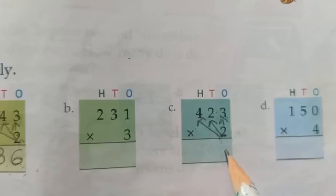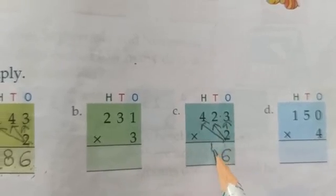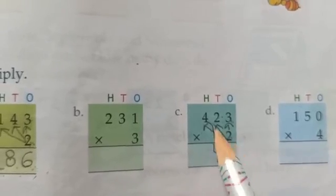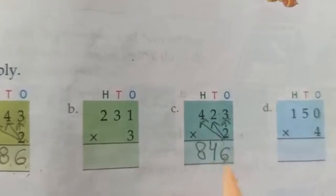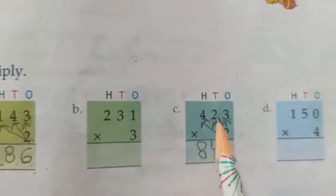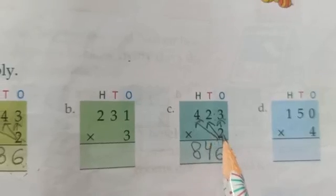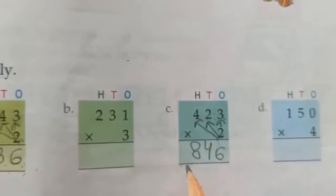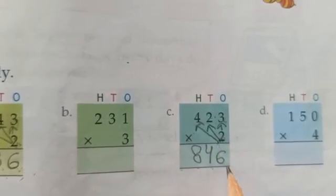3 twos are 6, 2 twos are 4, and 4 twos are 8. So 423 multiplied by 2, and the product is 846.